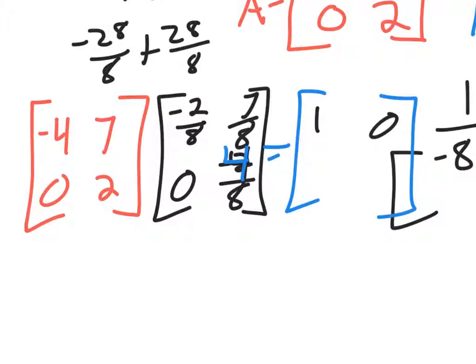And then likewise, you go through your multiplication. 0 times this is 0. 2 times 0 is 0. And then 0 times 7 over 8, that's 0. 2 times 4 over 8, that is 1.